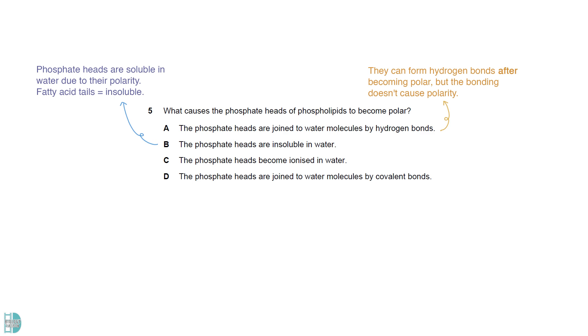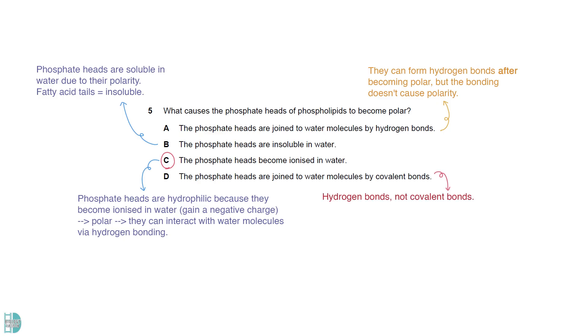The correct answer is C. The phosphate heads of phospholipids are hydrophilic because they become ionized in water, gaining a negative charge. This charge makes them polar, allowing them to interact with water molecules via hydrogen bonding. D is incorrect. Their interactions with water molecules happen via hydrogen bonds, not covalent bonds.